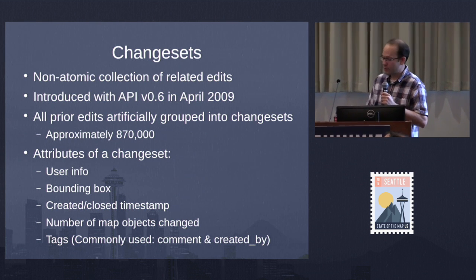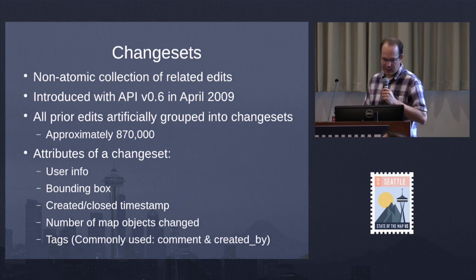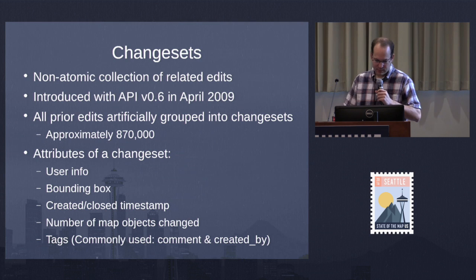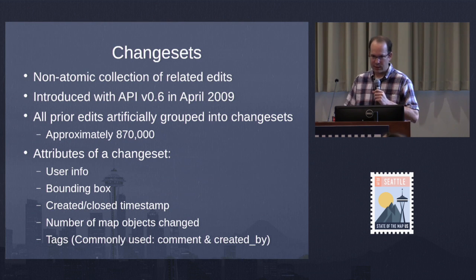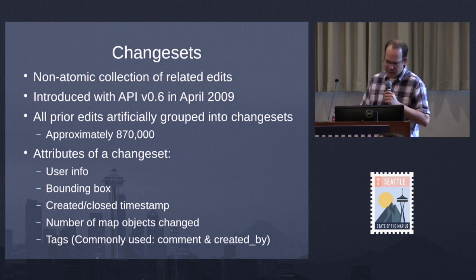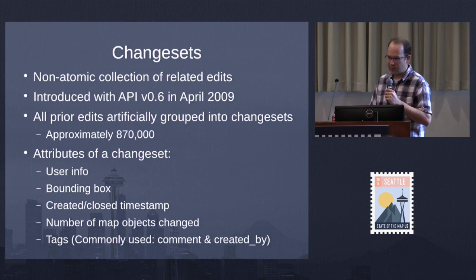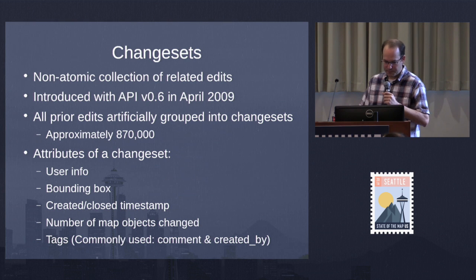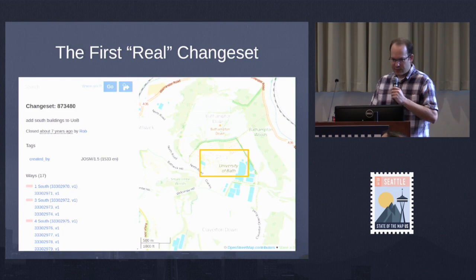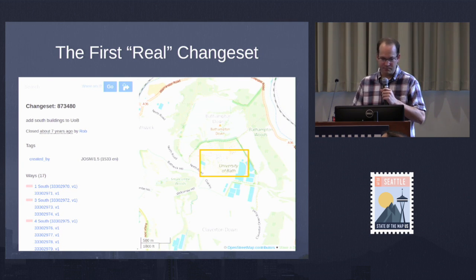What information do we have on each changeset? We've got user information — who made the edit, where they made it, the time they submitted changes to the OpenStreetMap server, and the number of map objects the changeset touched. And like every object in OSM, it has tags that can be completely freeform. Generally we always try to set a comment, and most editors set a 'created_by' tag to indicate which editing software was used. As best I can tell, this is the first real changeset, made after API 0.6 was released — just adding some buildings on a university campus, nothing special.